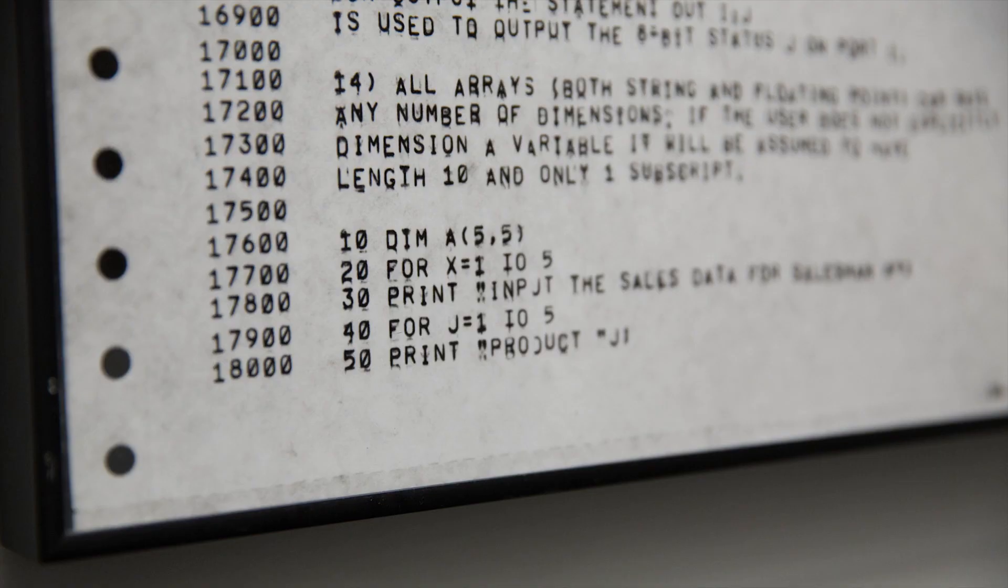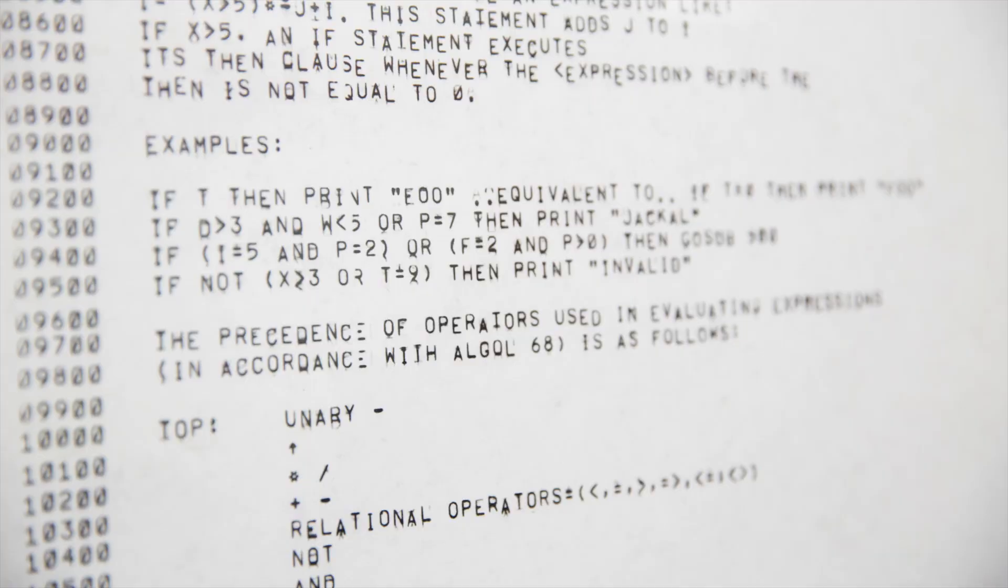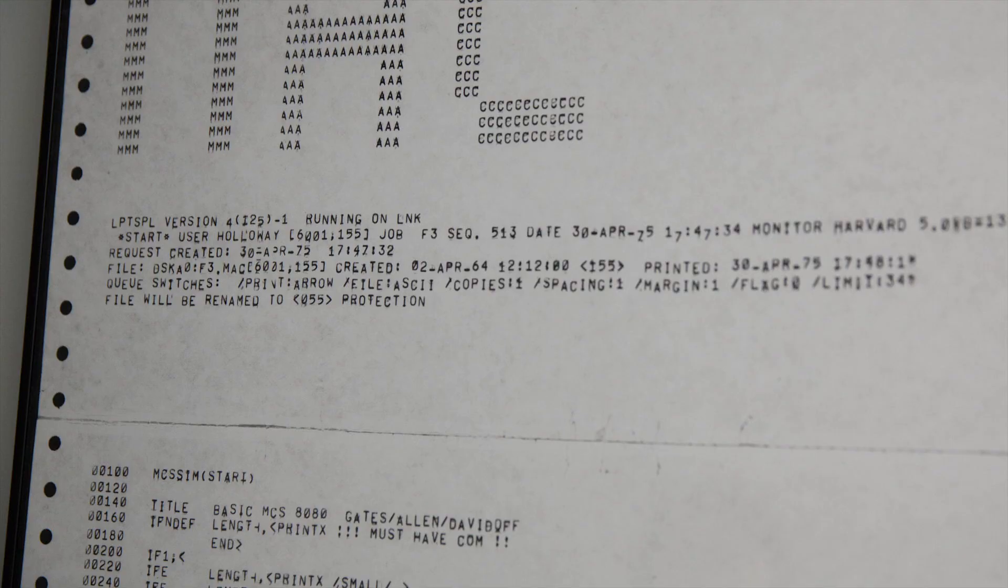The code is interesting for two reasons. First of all, it became Microsoft's first product, which was an interpreter for the BASIC programming language. And secondly, this was one of the first attempts to create an interpreter so ordinary people could use personal computers.